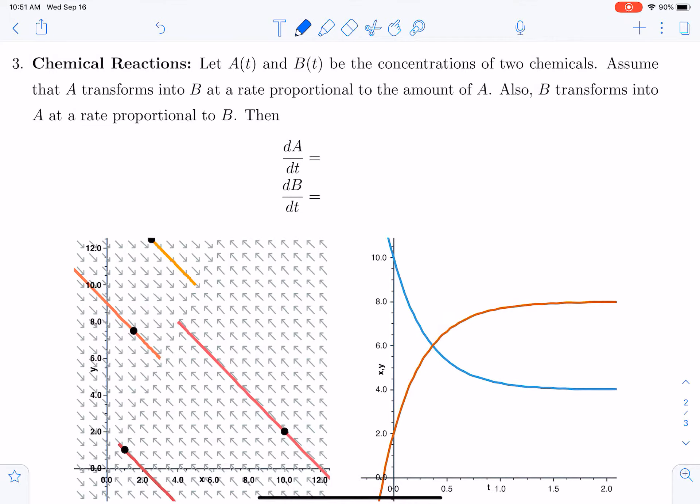Another common example that leads to systems of differential equations is that of chemical reactions. In this case, we're going to let A and B be the concentrations of two chemicals and we're going to assume that A transforms into B at a rate proportional to the amount of A, and B transforms into A at a rate proportional to the amount of B.